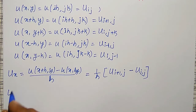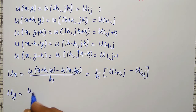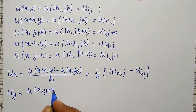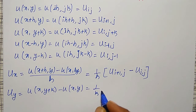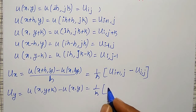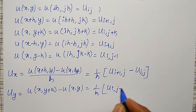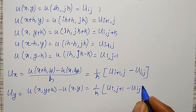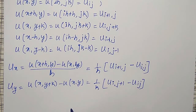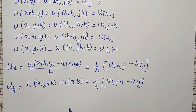Similarly, the forward difference for u_y can be written as u of x comma y plus k minus u of x, y, divided by k. In short notation, that is 1/k times u_{i, j+1} minus u_{i, j}. These are forward differences.